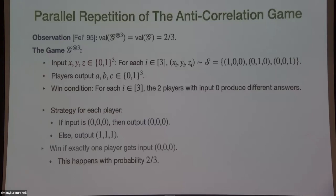Question about online version: if y_i can depend on x_1 through x_i but not x_{i+1}, is it easy to show you cannot do better? That is called sequential repetition. The idea is that if you condition on everything up to coordinate i, you have exactly one copy of the game in coordinate i. By induction the value is value^{i-1}, and then it's the same argument — in coordinate i you're getting independent questions, and if you could do better, the players could just fix this randomness in the initial game.